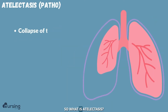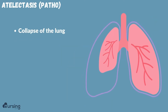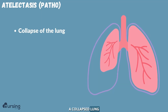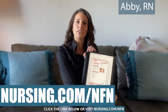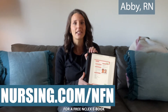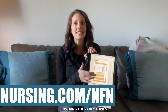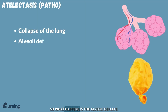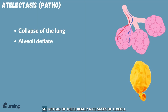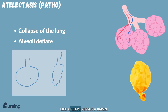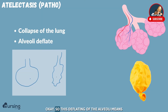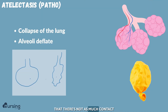So what is atelectasis? In simple terms, atelectasis is a collapsed lung or collapsed lobe of a lung. What happens is the alveoli deflate. So instead of these really nice sacks of alveoli, you have one that's deflated — like a grape versus a raisin. This deflating of the alveoli means that there's not as much contact and ability to have gas exchange.